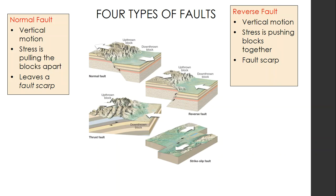The second type is a reverse fault, where you're also getting vertical motion, but this is from the stress of blocks pushing together rather than pulling apart. Similarly, you're going to get a fault scarp — these two things push together and it pushes some stuff up.